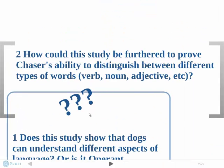My second question was: how could this study be furthered to prove Chaser's ability to distinguish between different types of words such as verbs, nouns, adjectives, etc.? I thought it would be interesting to incorporate experiments to find out if the dog could understand qualities of objects — adjectives like 'fuzzy' or 'warm' — or adverbs like 'run slowly' or 'run fast.' Doing this could help us further explore the language acquisition device and perhaps see how all of these phenomena developed within language in the first place.